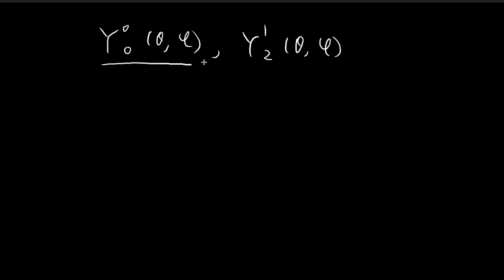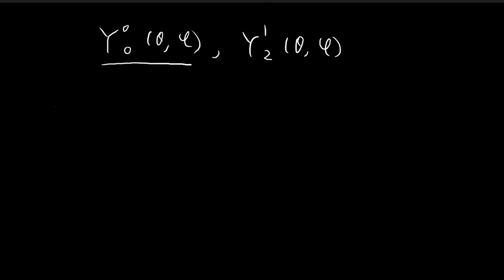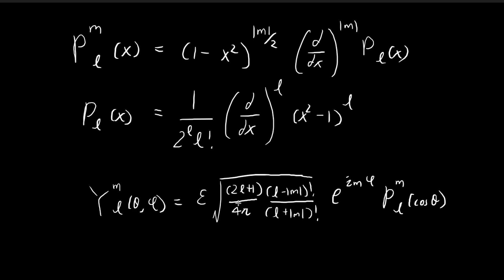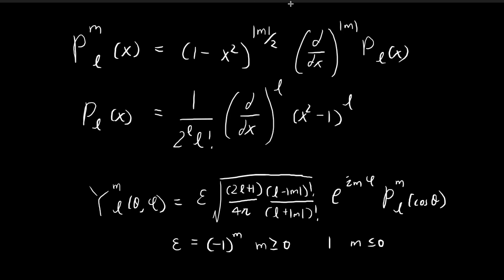Let's focus on Y₀⁰ first. We're going to apply the formula directly, corresponding to the case where l is equal to 0 and m is equal to 0. Epsilon is a special number equal to (-1)^m when m ≥ 0, and +1 when m ≤ 0. In our case, when m is equal to 0, epsilon is just equal to 1, so we ignore that term.